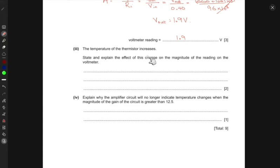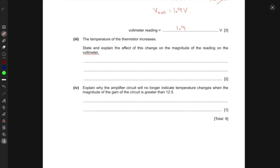Next, the temperature of the thermistor increases. State and explain the effect of this change on the magnitude of the reading on the voltmeter. If the temperature increases, then the resistance of the thermistor will decrease. If the resistance decreases, then the gain or voltage V will decrease. Hence, the reading on the voltmeter decreases.